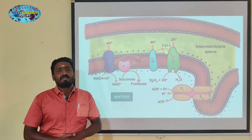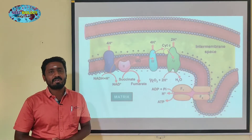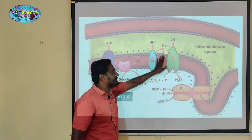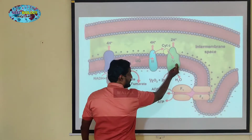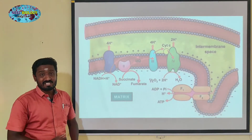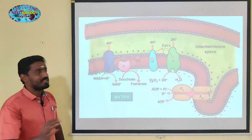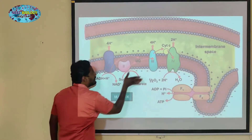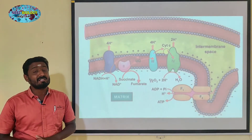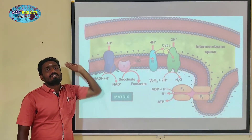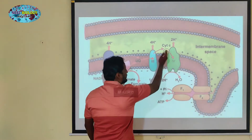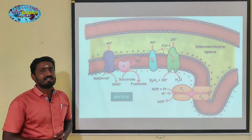If you want to see the electron transport chain, you will see how electrons move from one complex to another complex. The electrons move and gain energy, and that energy is used to pump protons. The electron transport chain is helpful for the transport of protons from the matrix to the intermembrane space.